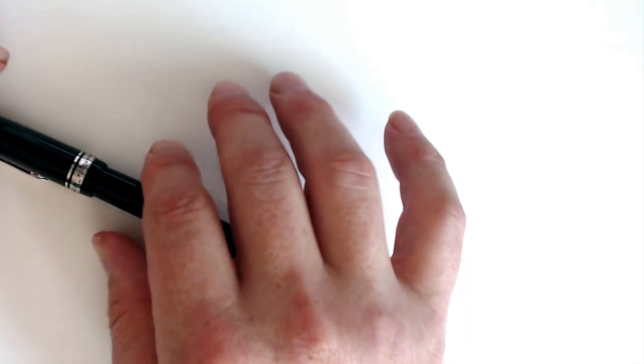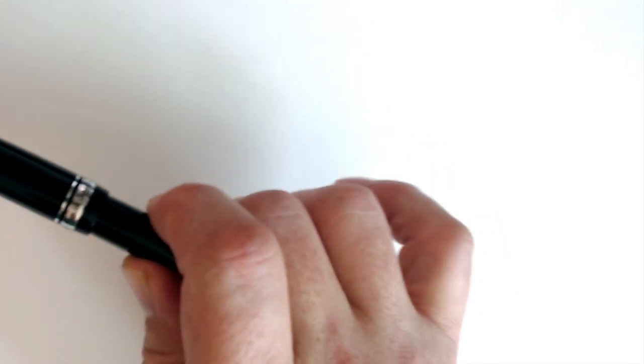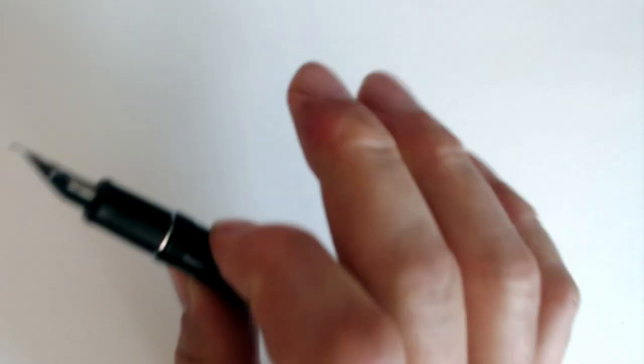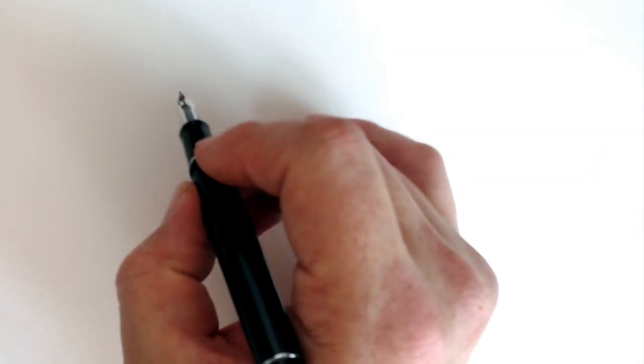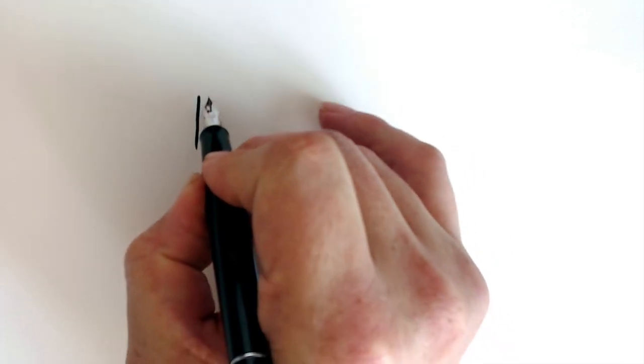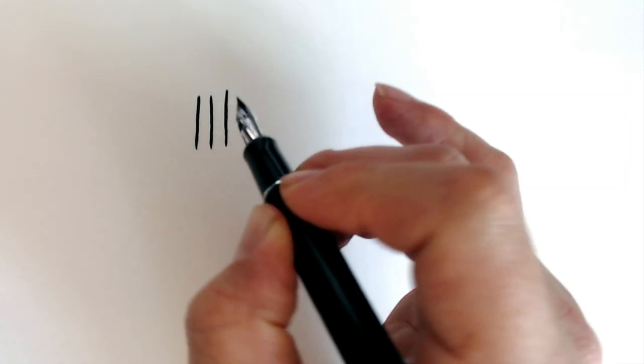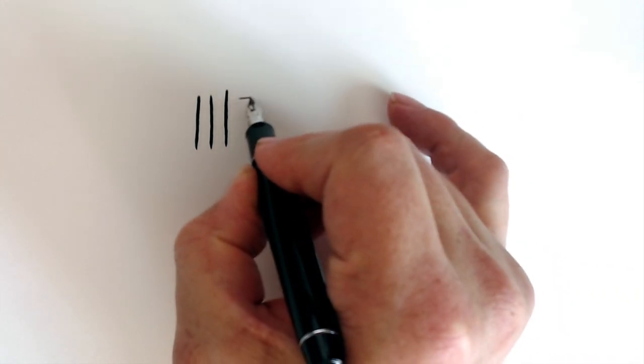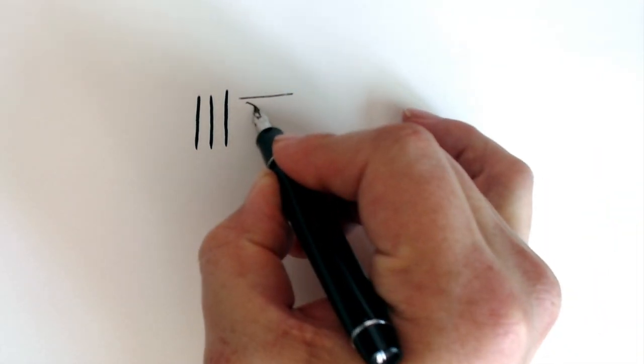Now that we understand the importance of line variation, let's talk about how to achieve it using a flexible fountain pen. The main difficulty is that this kind of pen can only create thick lines on the down stroke, like so, so that the tines of the nib are aligned with the direction of the stroke. You never want to flex your pen on a side stroke, or even a diagonal stroke, like so.